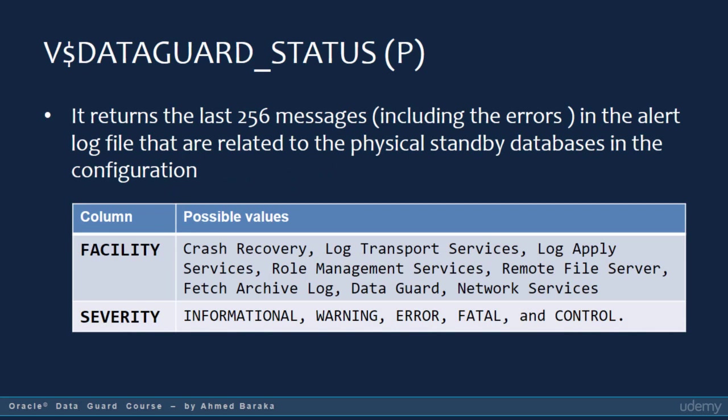In this lecture, whenever you see the letter P in brackets, it means I am talking about a monitoring tool for a physical standby database. Whenever you see the letter L in brackets, it means the tool is for a logical standby database. If neither letter appears, the tool can be used with any database type.